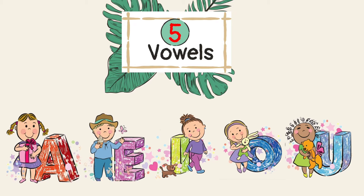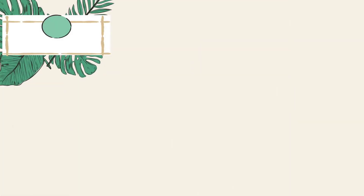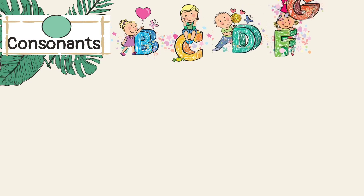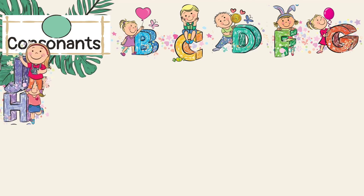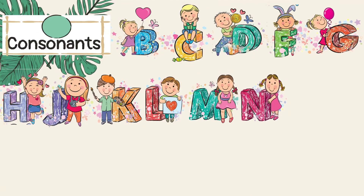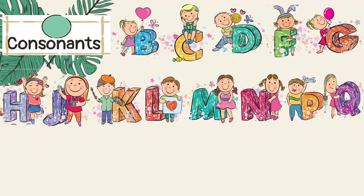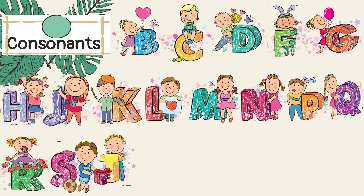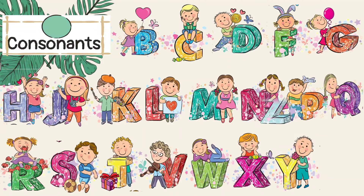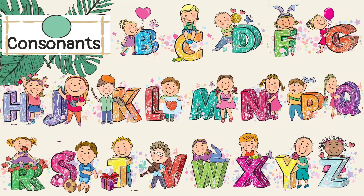Besides A, E, I, O, U, the rest of the letters are consonants. The letters B, C, D, F, G, H, J, K, L, M, N, P, Q, R, S, T, V, W, X, Y, Z. All together, there are 21 consonants in the English alphabet family.